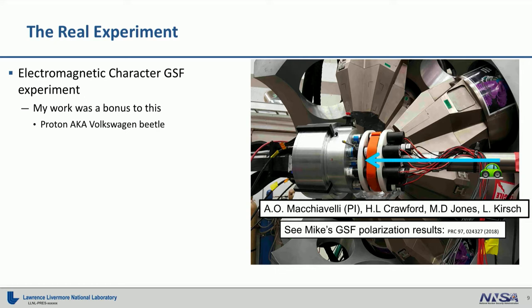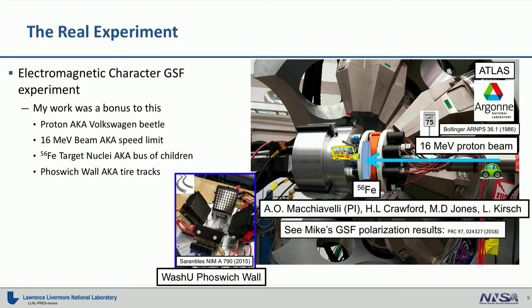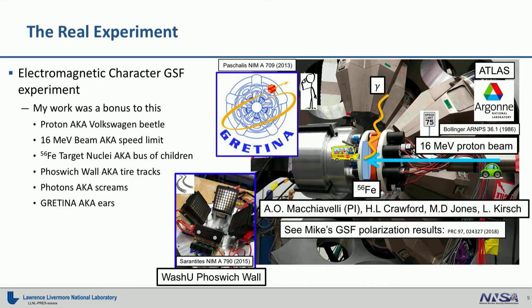Now, we have a beam of protons coming down a beam pipe. This is done at Argonne National Lab, and using the Atlas facility, which sets the beam energy. We have a target of iron-56 in the scattering chamber, and we have a PHOSWICH wall determining the energies of the scattered protons. The gamma rays emit from the iron into a detector of germanium, which we call Gretina. And you are Gretina listening into iron-56, emitting these gamma ray screams that are Doppler shifted.